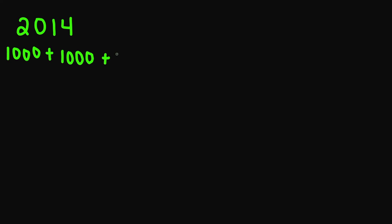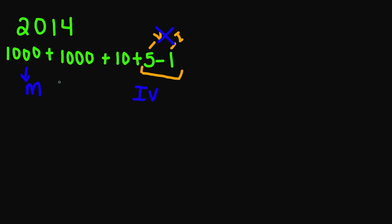Let's look at 2014. I'm going to break this up into one thousand plus one thousand plus ten plus five minus one. The first thing I notice is that I have a subtraction. So five is V and one is I, but because I'm subtracting I'm not going to use VI — I will use IV. So one thousand is M, one thousand again is M, the ten is X, and your final answer is MMXIV.